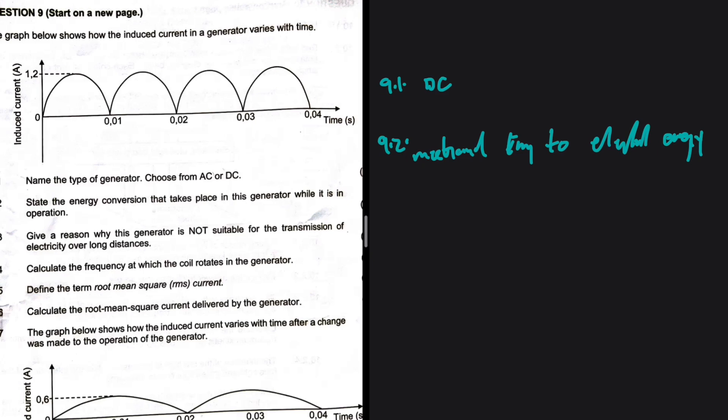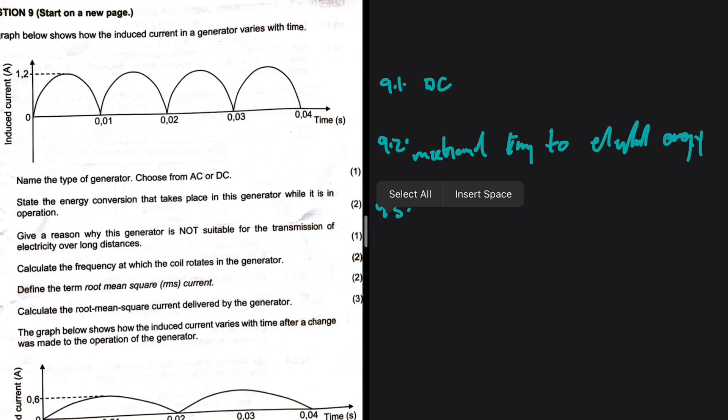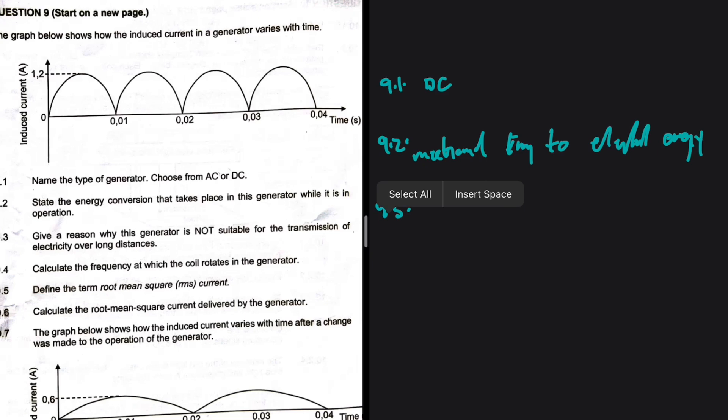9.3: Give a reason why this generator is not suitable for the transmission of electricity over long distances. That is because there's a lot of energy loss in a DC generator over long distances. That's one of the advantages that AC has over DC, in that you can use AC to transport electricity over a long distance. But with DC, there's a lot of energy loss.